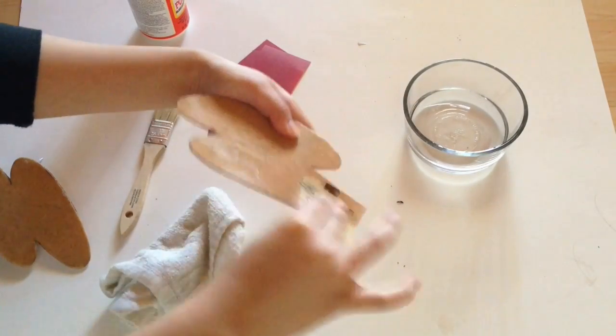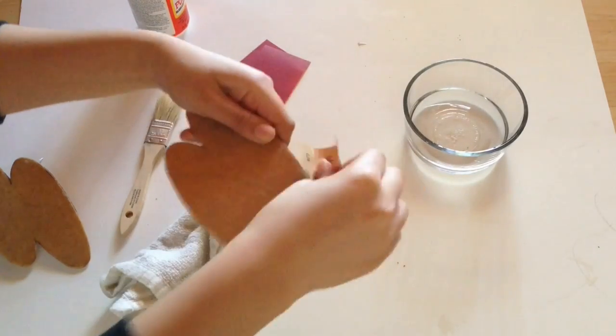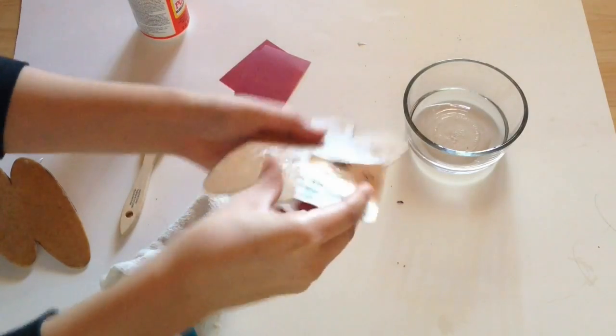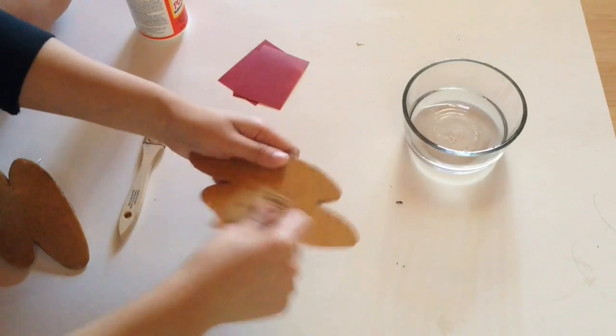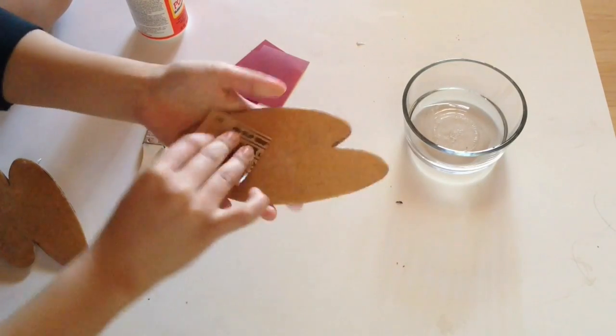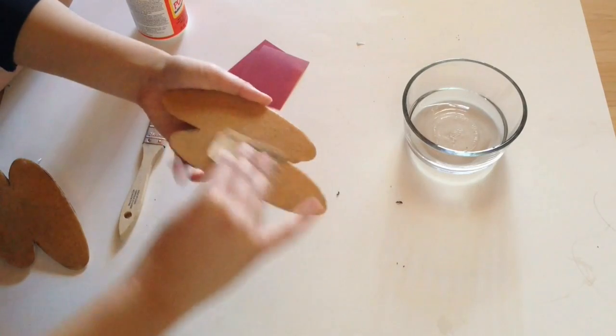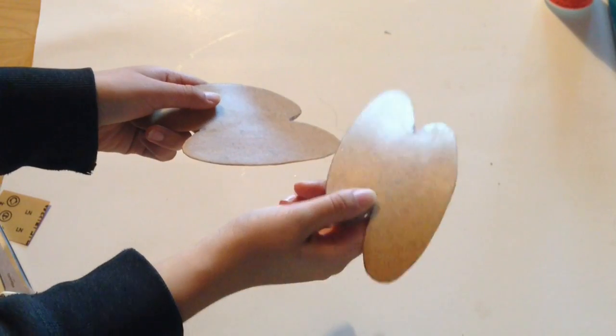This part can be pretty tedious, so make sure you have Netflix or something to watch while you're doing this. In order to achieve a really nice and evenly smooth surface, you're gonna want at least five layers of Mod Podge, and don't forget to sand down each layer before adding a new one. Your finished product should be smooth without any streak marks.